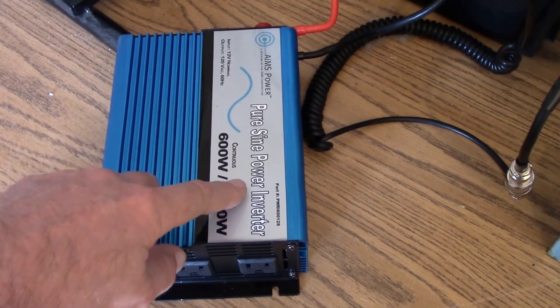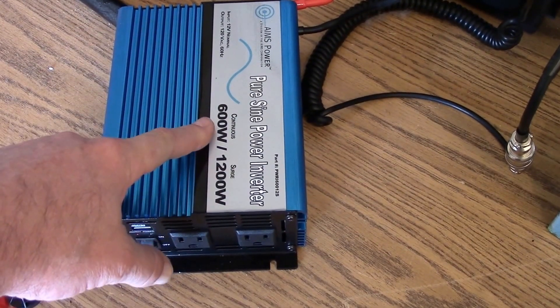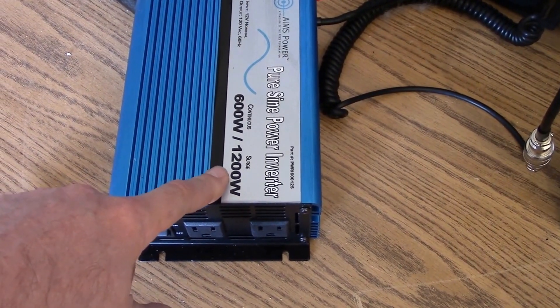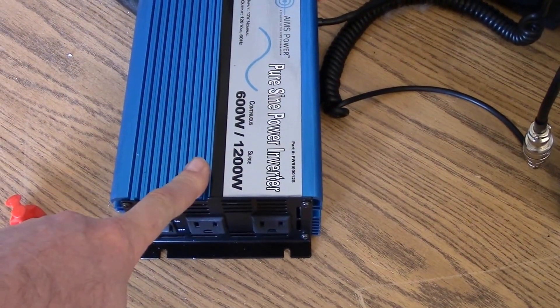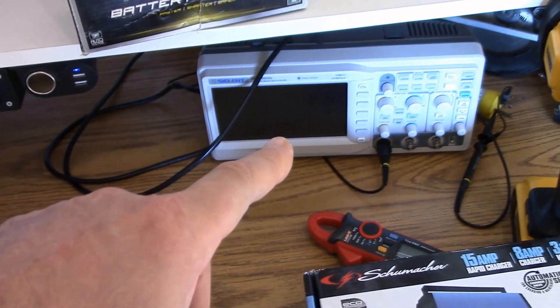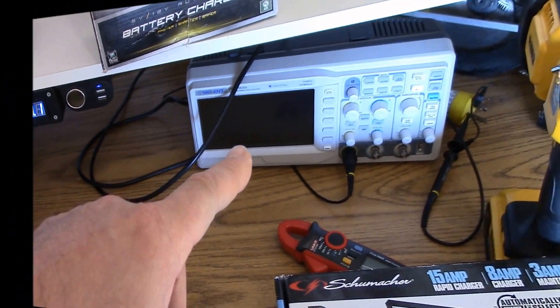AIMS pure sine wave power inverter, 600 watt continuous, 12 volt, and has a surge to 1200. And I've already tested this out with my oscilloscope. Check this out, I'll show you a picture here.